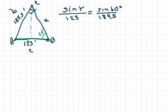You're going to get sine of gamma, so I'm going to cross multiply here to get sine of gamma equals 123 sine of 60 degrees over 184.5 feet.